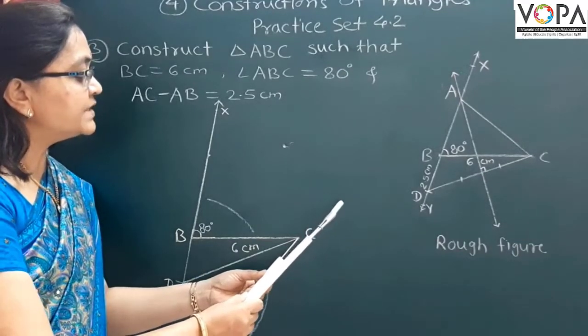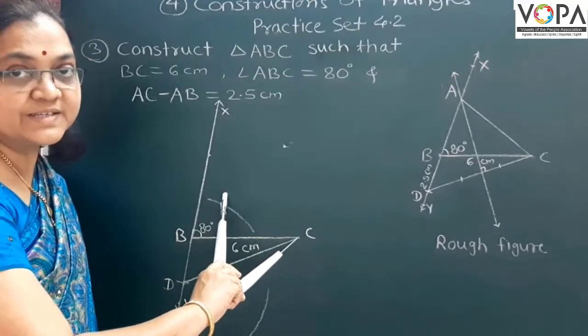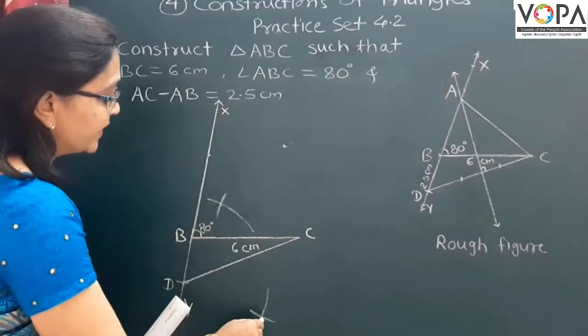Take point C at the center. Draw arcs which intersects the first one. Join these two points.